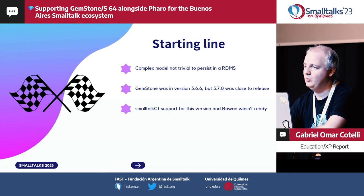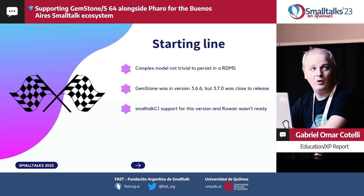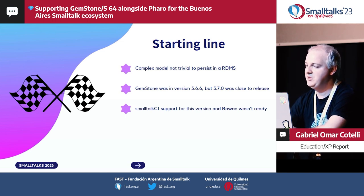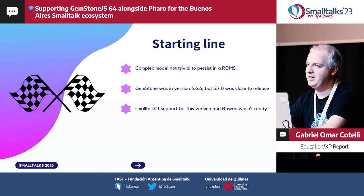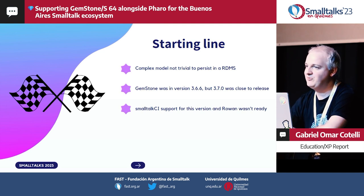We have other products working with other versions of GemStone, but for this special case we needed to migrate part of the tech stack. When we started the migration a few months ago, the current version of GemStone was 3.6.6, but we knew that 3.7 was to be released in the meantime. So we already knew when we started that we'd need to migrate from one version to another. At the moment we started, neither SmalltalkCI support nor the new IDE was ready, so we had to do something about that.